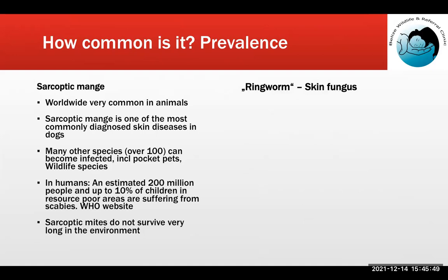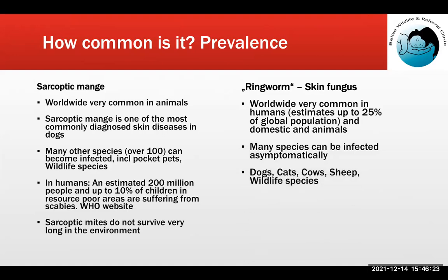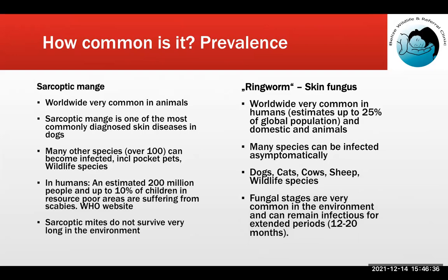Ringworm, which is a fungus, is very common — not just in animals but also in humans — with estimates of up to 25% of the global population infected with skin fungi. It is also extremely common in domestic and wild animals. For both diseases, many species can be infected asymptomatically, meaning they carry the disease agents without showing any signs. Common sources include dogs, cats, cows, sheep, and many wildlife species. As opposed to sarcoptic mites, fungal stages are very resistant in the environment and can remain infectious for between 12 and 20 months.